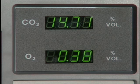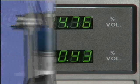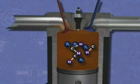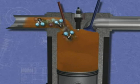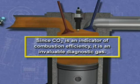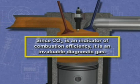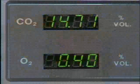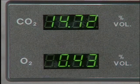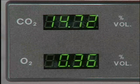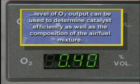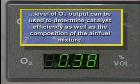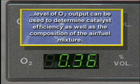Although carbon dioxide and oxygen are not pollutants, most emission analyzers are designed to measure these gases. Carbon dioxide, or CO2, is a product of ideal combustion when each carbon atom is joined by a pair of oxygen atoms. Since CO2 is an indicator of combustion efficiency, it is an invaluable diagnostic gas. Identified as a percentage, CO2 will usually measure between 13 and 17 percent under normal conditions. Oxygen, which is also measured in percentage, is another vital diagnostic gas. A vehicle's O2 output can be used to determine catalyst efficiency, as well as the composition of the air-fuel mixture.